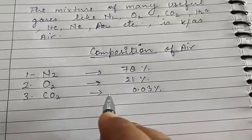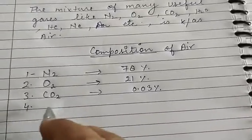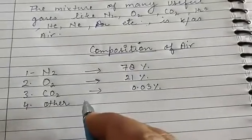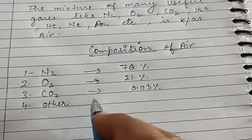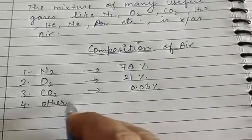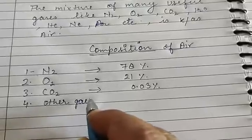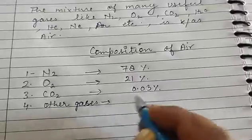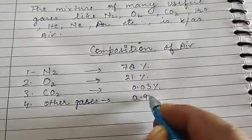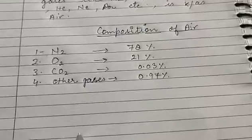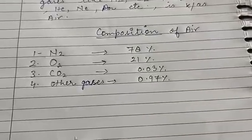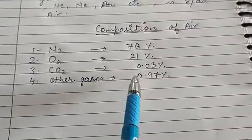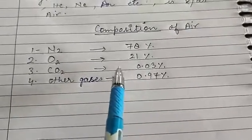Other gases like water vapour and some noble gases have a percentage of 0.97%. So these are the main components of air and I've explained the percentages.